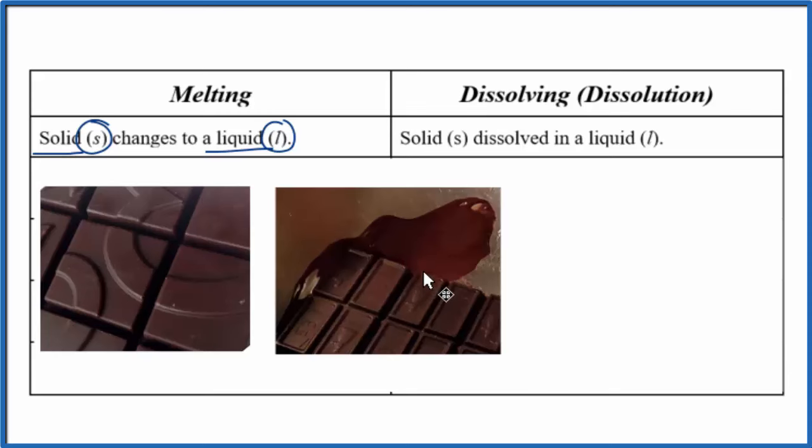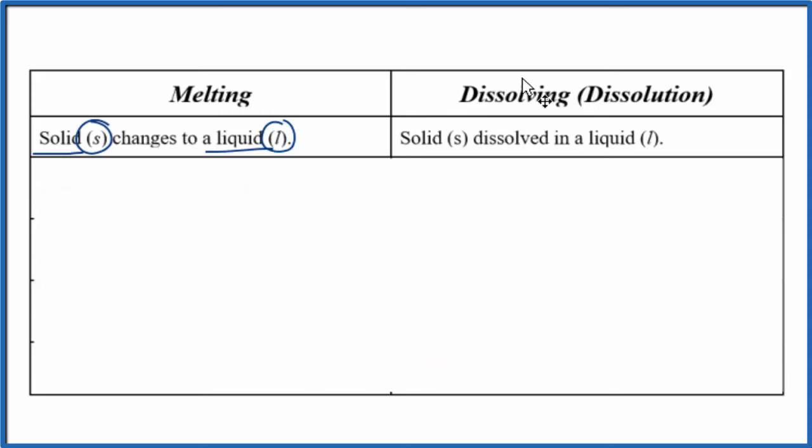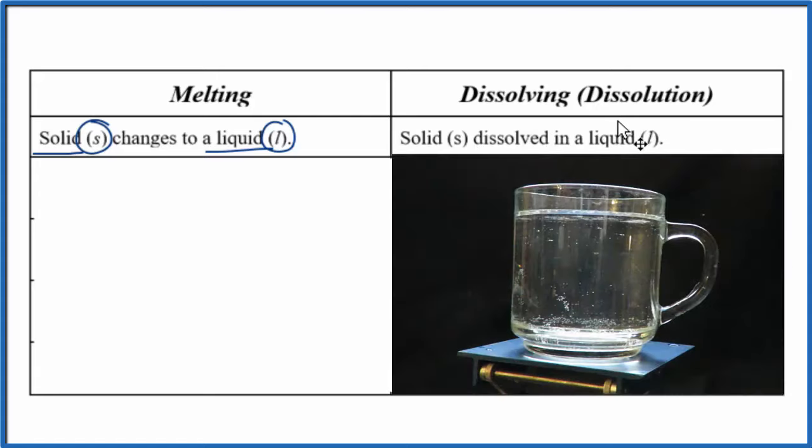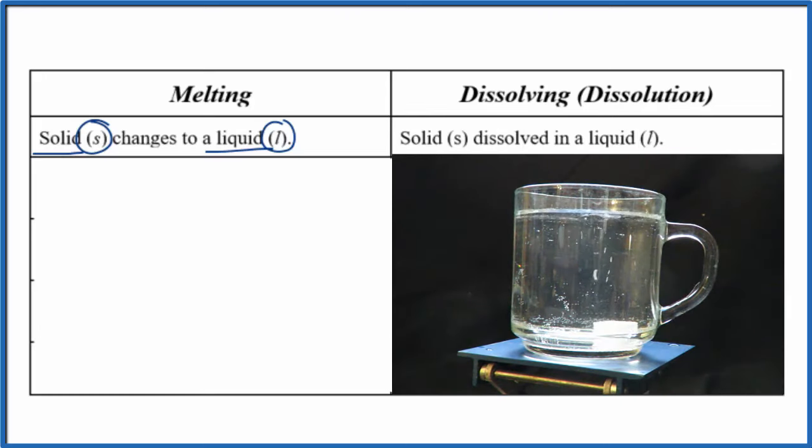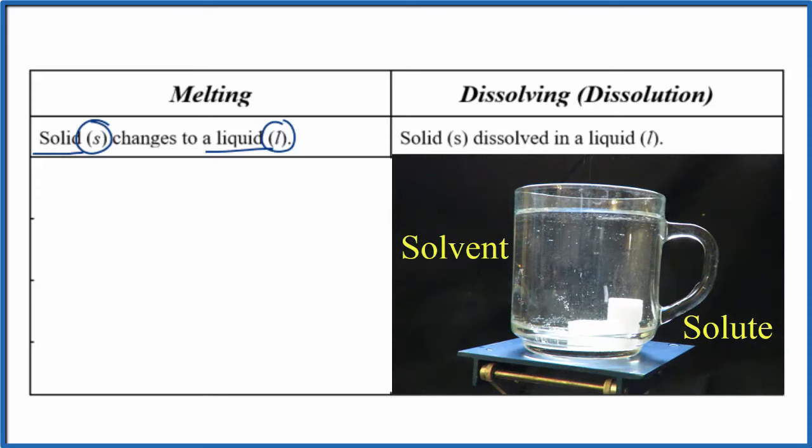For dissolving we're normally talking about a solid dissolving into a liquid, so the solid is different from the liquid. A good example would be sugar into water. So we take some sugar cubes, we put them in water. The sugar, that's called the solute. The water, that's the solvent. The solvent dissolves the solute and we end up with a mixture - a homogeneous mixture - and we call that a solution.